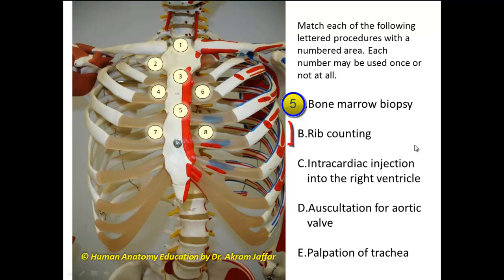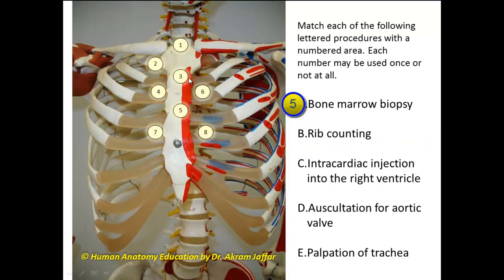The numbered structure used for rib counting is the sternal angle. The sternal angle is a joint between the manubrium of the sternum and the body of the sternum — the manubriosternal joint. It is a secondary cartilaginous joint with a slight angulation of about 7 degrees and can be felt just beneath the skin. Going just lateral to it, we find the second costal cartilage, and we can start rib counting from this position.